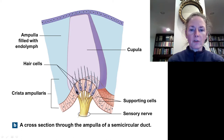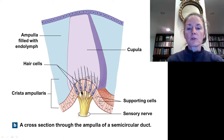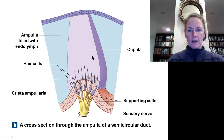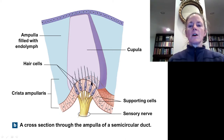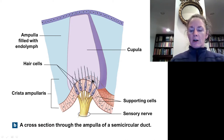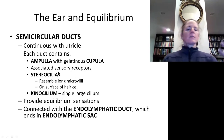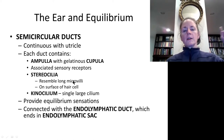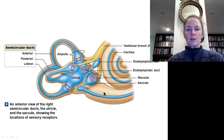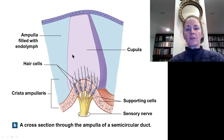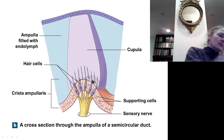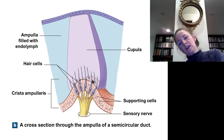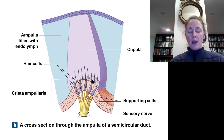The crista ampullaris has hair cells with supporting cells, and the dendrites of neurons monitor the hair cells. The projections on the hair cells — called stereocilia, even though they're more like microvilli — are embedded in the gelatinous mass. There is also one true cilium called the kinocilium. As the gelatinous mass is bent by fluid movement through the canal, it bends the stereocilia. When they lean toward the kinocilium, it encodes one direction; leaning away encodes the opposite direction.